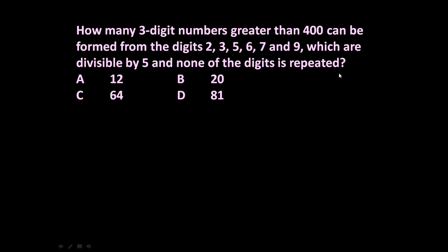Three conditions are given: the number should be greater than 400, it should be divisible by 5, and none of the digits is repeated. Six digits are given: 2, 3, 5, 6, 7, and 9. Since it is a three-digit number, there will be a unit place, tens place, and hundreds place.